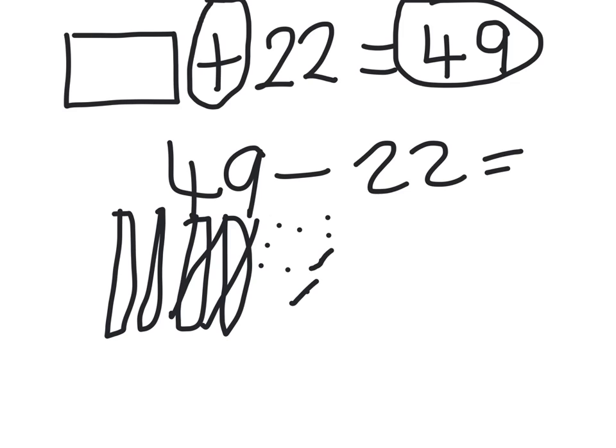And count what's left: 10, 20, 21, 22, 23, 24, 25, 26, 27. So my missing number is 27.